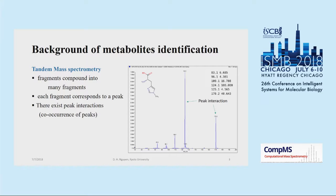Mass spectrometry is one of the common techniques to deal with metabolite identification. In general, the device fragments a compound into many fragments, and the mass and frequency of fragments will be recorded to obtain a mass spectrum like this. A mass spectrum can also be represented by a list of peaks, and each peak corresponds to a fragment captured by the device. In many cases, there exist some interactions between peaks — that is, co-occurrence of peaks in many spectra.